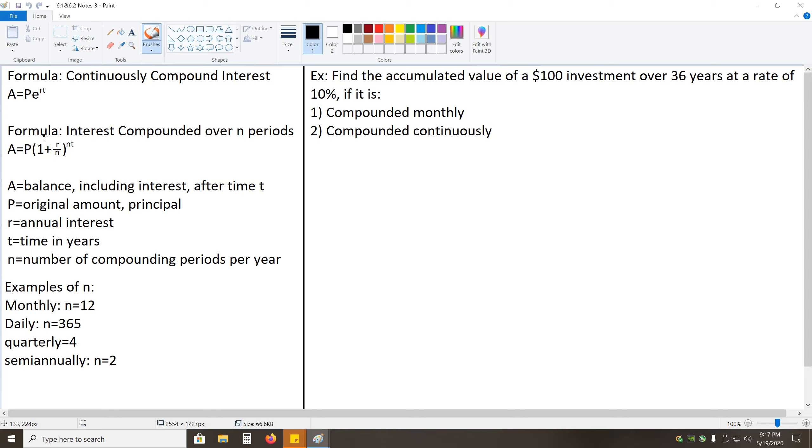And from here, the formula for interest compounded over N periods, so that means if you have 10 periods in one year, every time one of those 10 periods comes up, you gain interest on your interest. The formula for that is A equals P times 1 plus R over N, all to the NT.